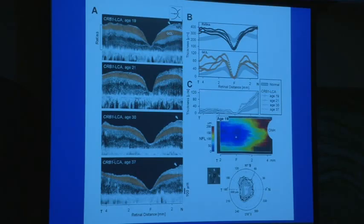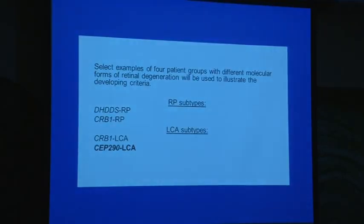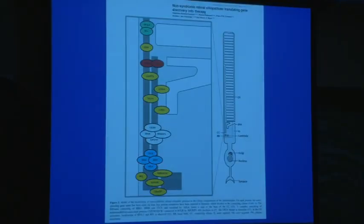The bottom line is that ganglion cells and nerve fiber layers were present, detectable, normal or thick. CEP290 LCA is in the group of ciliopathies, of which there are many, causing retinitis pigmentosa and also causing LCA.